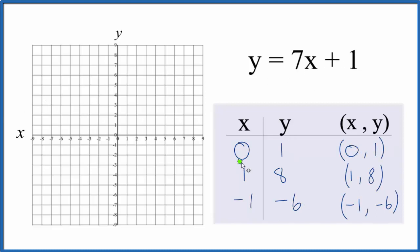So let's start out with 0 for x, y is 1. Then we have x is 1 and y is all the way up here at 8. And finally we have negative 1 for x and y is down here at negative 6. And you can see all of these points are on a line here.